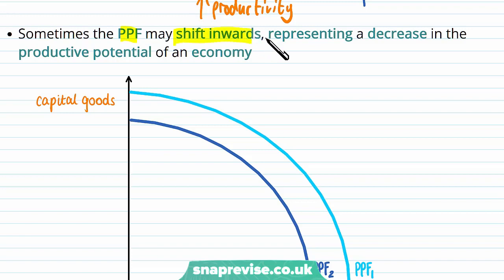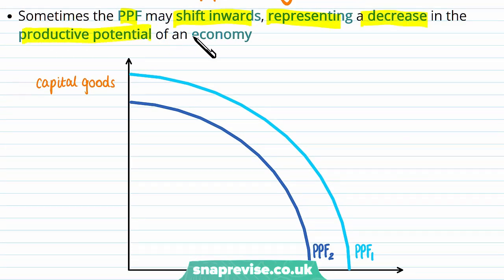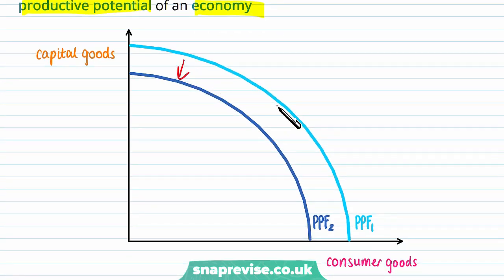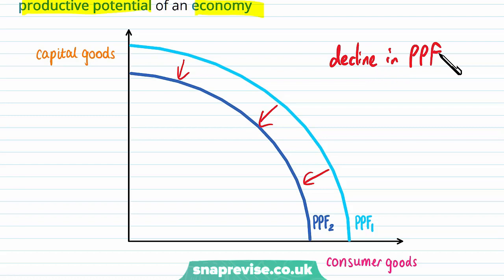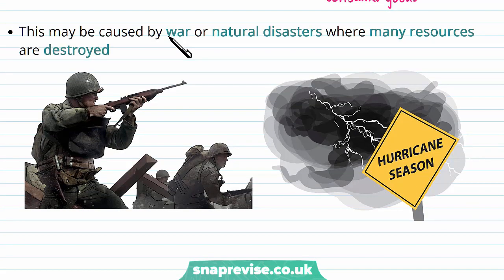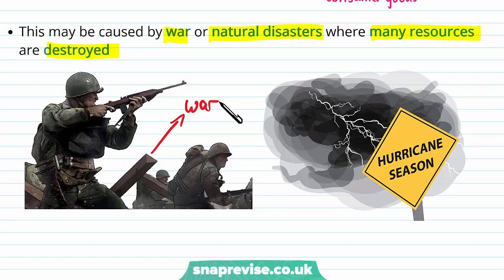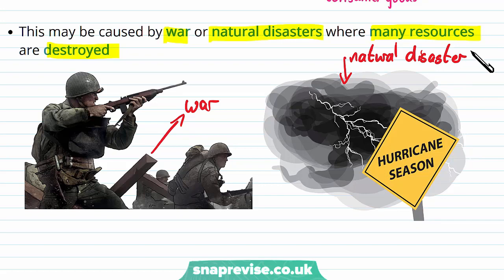Sometimes the PPF may shift inwards, which represents a decrease in the productive potential of an economy. This decline is known as economic decline — the reverse of economic growth. Reasons for an inward shift include war or natural disasters, where many resources are destroyed. With war, we might end up losing resources to bombings which destroy capital goods, reducing our ability to produce. With natural disasters, a big flood or storm could destroy agricultural goods and natural resources, meaning we are not able to produce as much, and therefore the PPF curve shifts inwards.